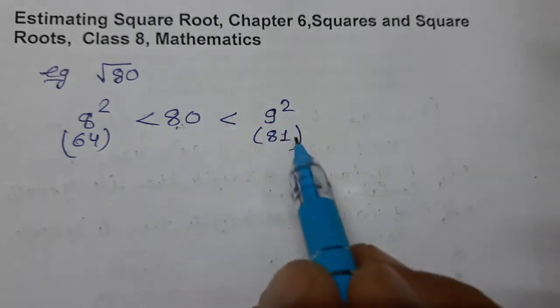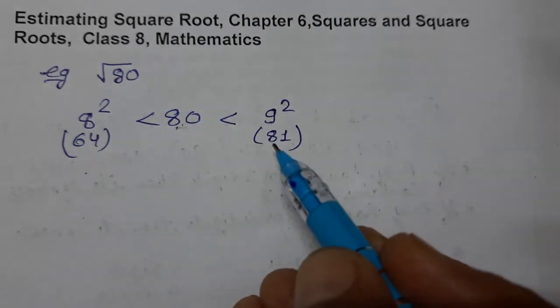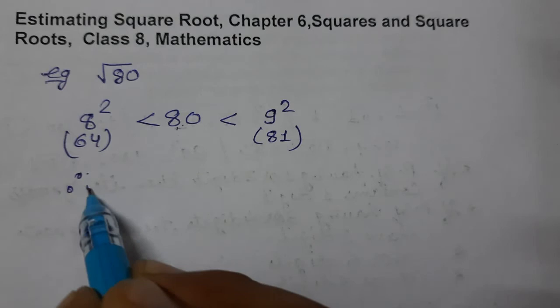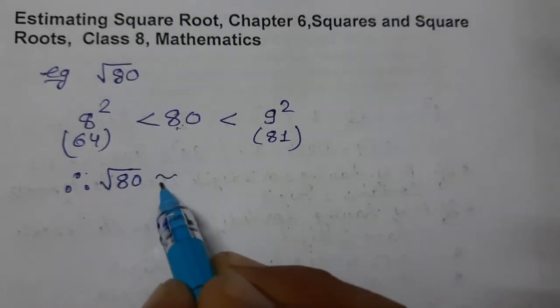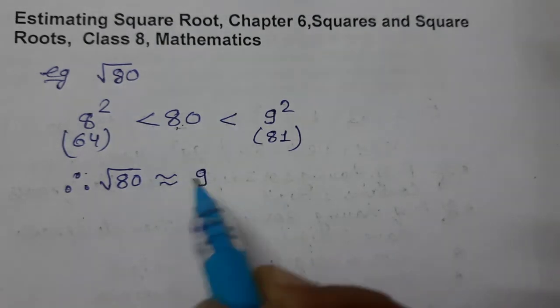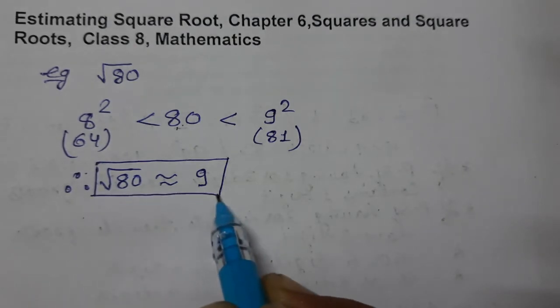9 ka square 81 is very close. So we can say that, therefore, in the nearest whole number, the square root of 80 is approximately equal to 9. That's the nearest whole number. Now see one more example.